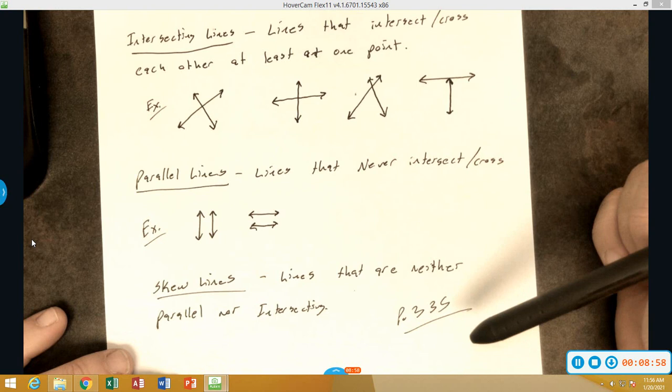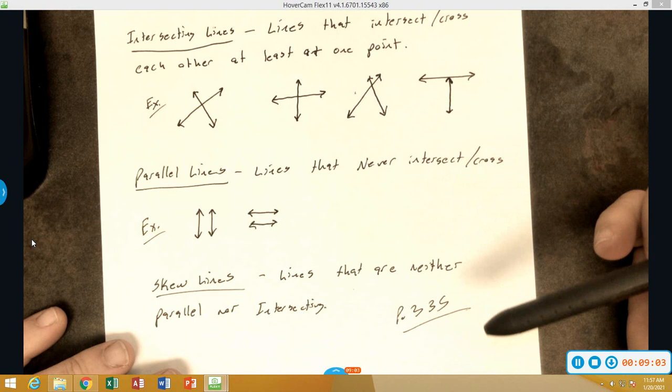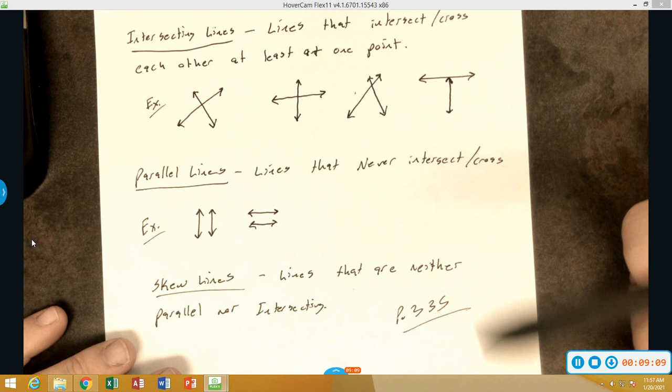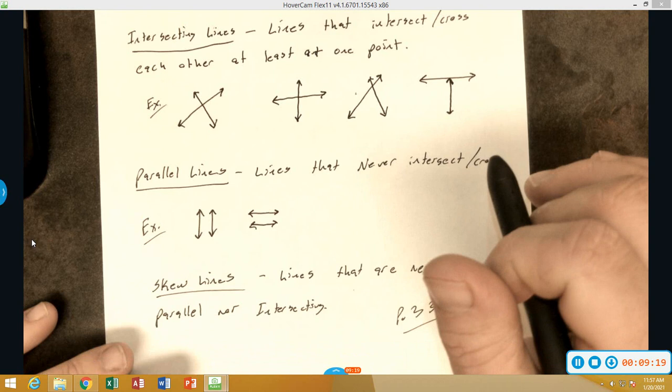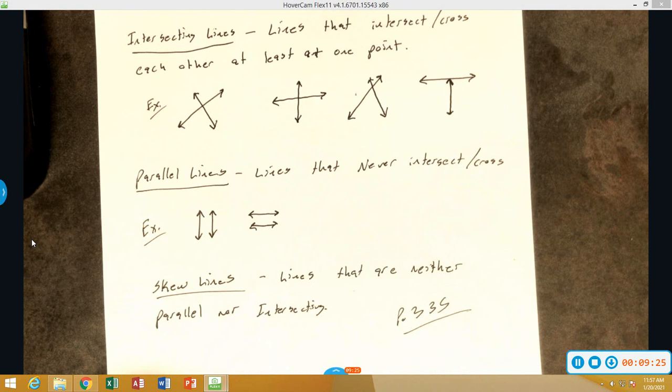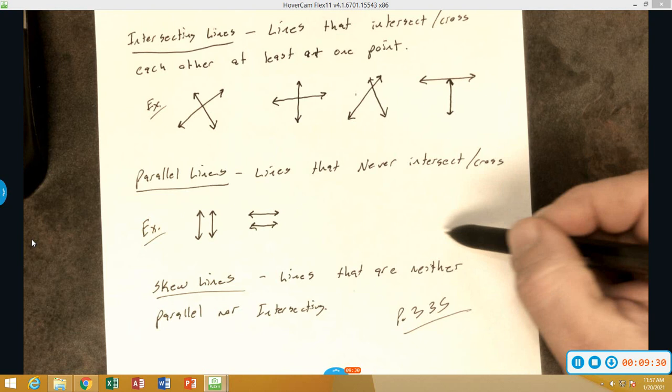Skew lines are lines that are neither parallel nor intersecting. You heard me talk about planes. I forgot that was something that I didn't add in here, but when we're talking about planes, planes are basically different spaces that we have. For example, your height. If we had a person's height, we could take different sections of that person as we go up through the height.